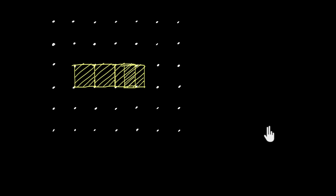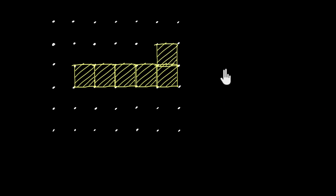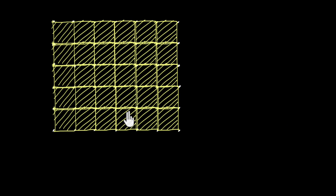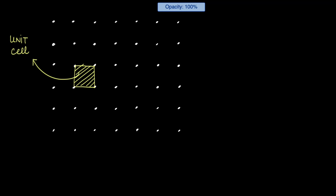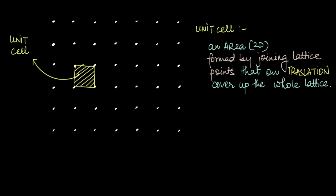Let us take a look at this particular two-dimensional lattice. If you had to name this lattice, what would you do? Well, we can think of this lattice to be made up of squares. We can take this particular square and translate it, and in this way, via translation, we can cover up the whole lattice. So all we did was think of a particular unit that on repetition can cover up the whole lattice. This particular unit is called the unit cell, and a unit cell should always be selected such that on translation it can cover up the whole lattice. Because this lattice can be thought of as made up of squares, we can call this a square lattice.